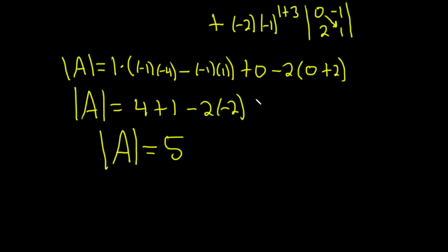Oh, this is a positive 2. I made a mistake here. Let me just backtrack this. I can't believe it's a small mistake. It's 0 plus 2, which is 2. There it is. 5 minus 4, which is 1.